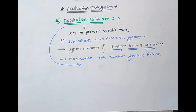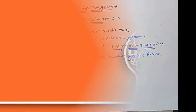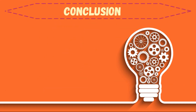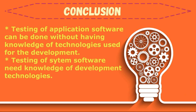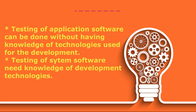These are the two categories included in application categories. The conclusion is: testing of application software can be done without having knowledge of the technologies used for development. However, testing of system software most of the time needs knowledge of development technologies.